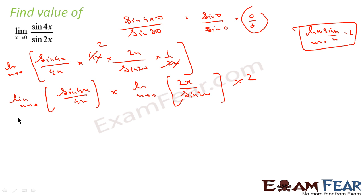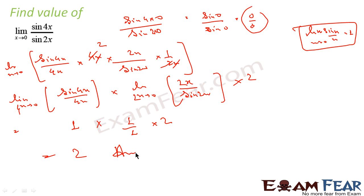We know that limit x→0 of sinx/x is the same as limit 4x→0 of sin4x/4x, because x→0 implies 4x→0 — it's the same thing. Similarly, limit x→0 of sin2x/2x equals 1, since x=2x in the formula sense. So each term equals 1, and the final answer is 2. We simply rewrote sin4x/sin2x using the standard formula limit sinx/x = 1 as x→0.